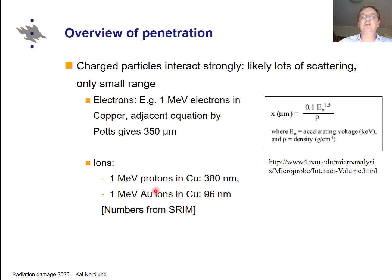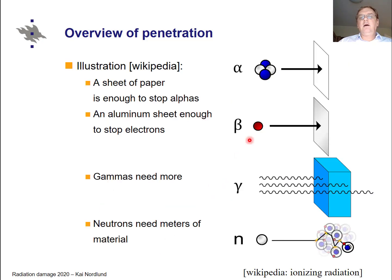And due to this, one can indeed illustrate the way how deep materials go like this. We have a picture from Wikipedia which fairly nicely illustrates this. So for alphas, alpha particles, charged helium nuclei, it's enough to have a sheet of paper to stop them. For electrons, a macroscopic aluminum sheet is enough to stop them. Gammas again need clearly more, and neutrons really a lot more to completely stop their penetration.